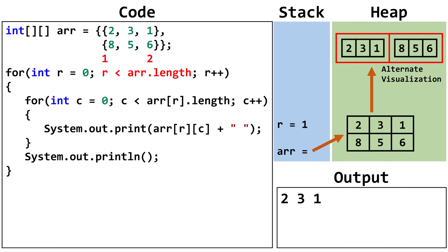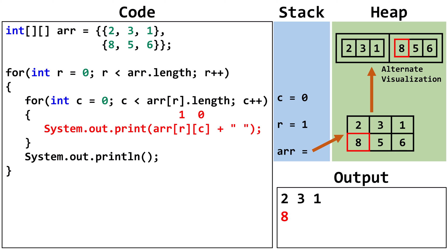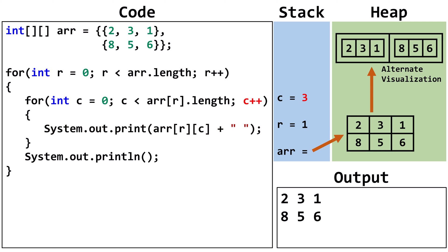Increment r to 1. R is less than 2, so we continue. Set C to 0. Now that r is 1, we are checking the length of row 1. C is less than 3, so we continue. We output arr row 1 column 0, which contains 8. Increment C to 1. C is less than 3, so we continue. We output arr row 1 column 1, which contains 5. Increment C to 2. C is less than 3, so we continue. We output arr row 1 column 2, which contains 6. Increment C to 3. C is not less than 3, so we terminate the inner loop. We output a new line. Increment r to 2. r is not less than 2, so we terminate the outer loop and the program finishes.